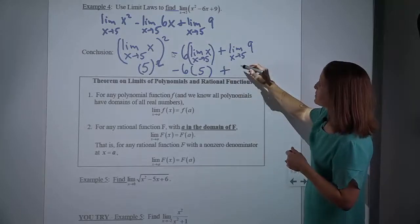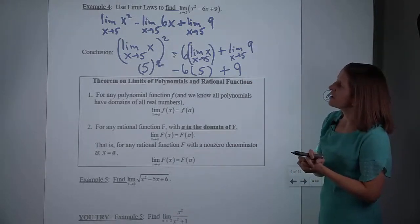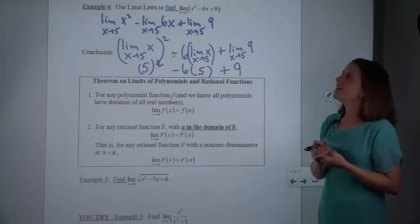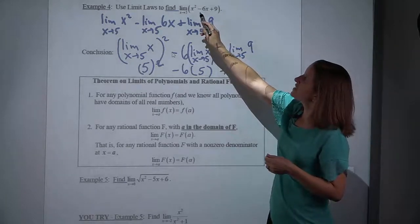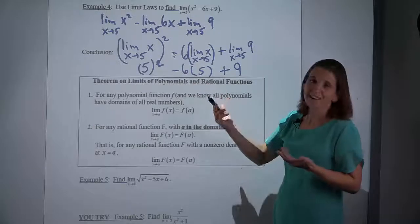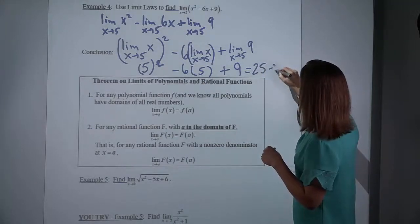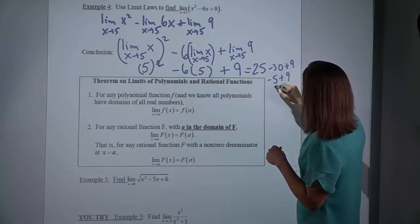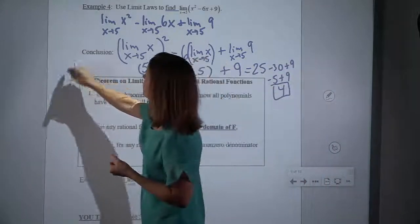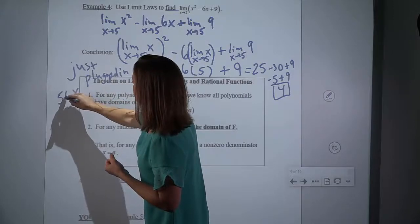So we wrote all those limit laws and talked about which ones we were using. But my question to you is: what does this last step look like we did? If you just looked at this last step, it looks like we took this function and simply replaced all x's with the number 5. So we did all this work and talked about limit laws, but couldn't I have just done that? And the answer is yes — actually, you could have just done that. So what do we get? 5 squared is 25, minus 30, plus 9 — so we have negative 5 plus 9, so we have 4.